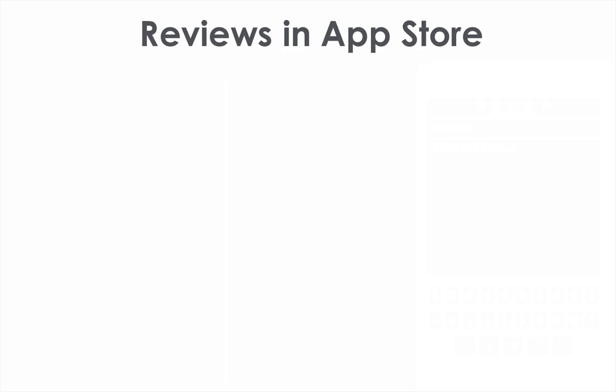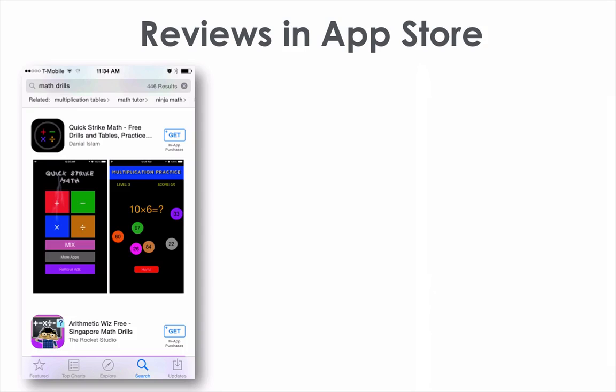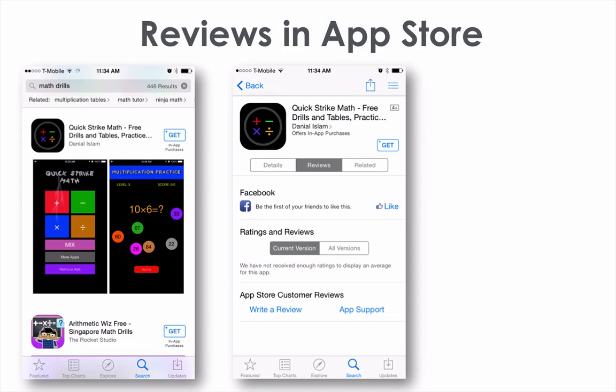The reason I'm showing you that is because we're going to see a different example. Still a math drill search result, and here you can see that this application doesn't have any stars on the outside. So let's go inside the application — we can see that this application doesn't have any reviews, and that's the reason why nothing is displayed on the outside.